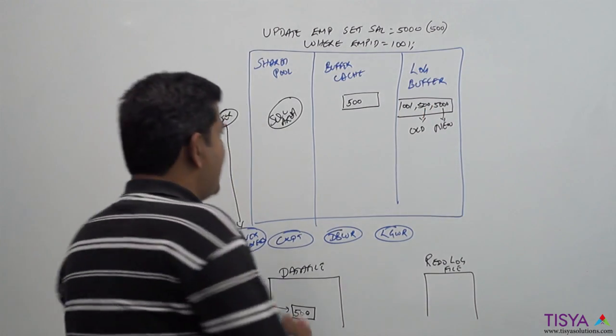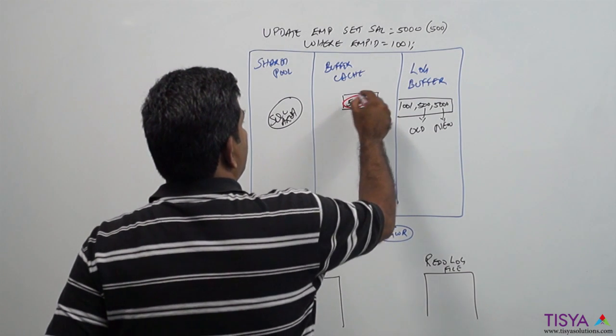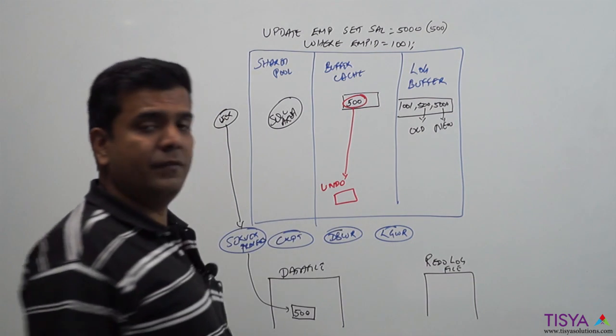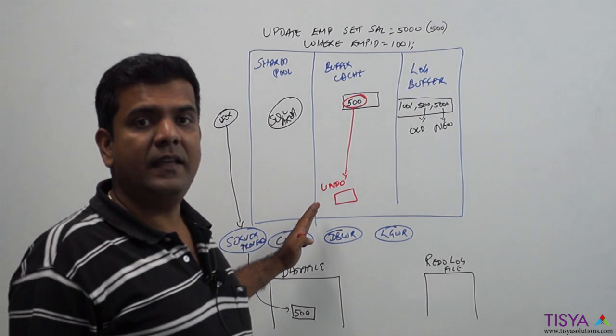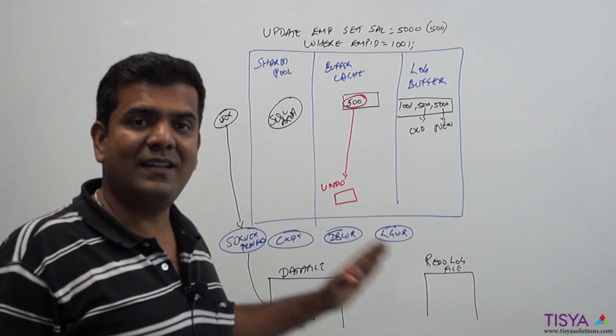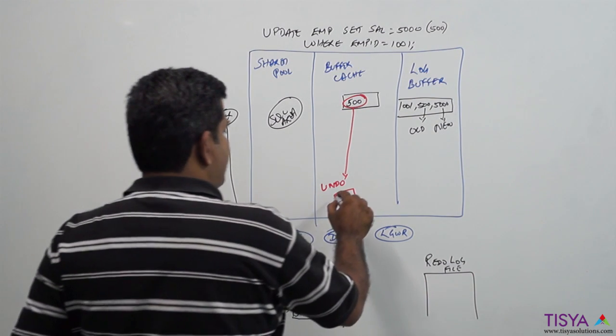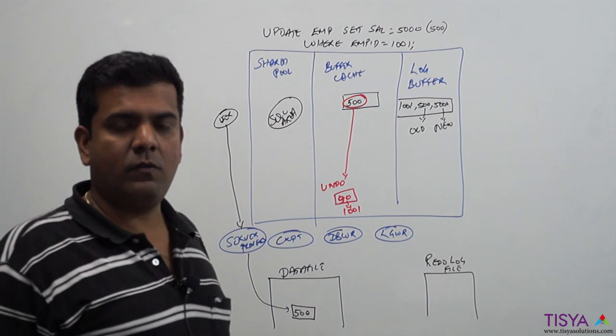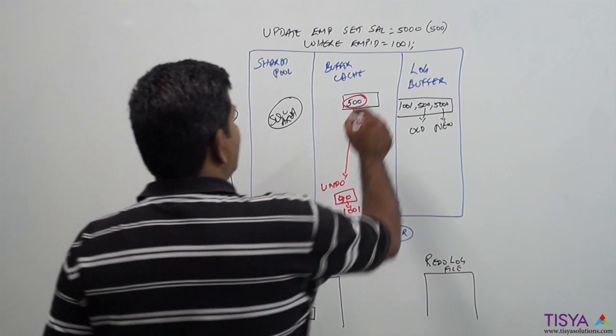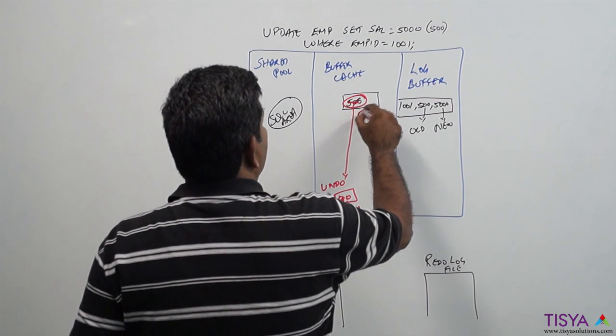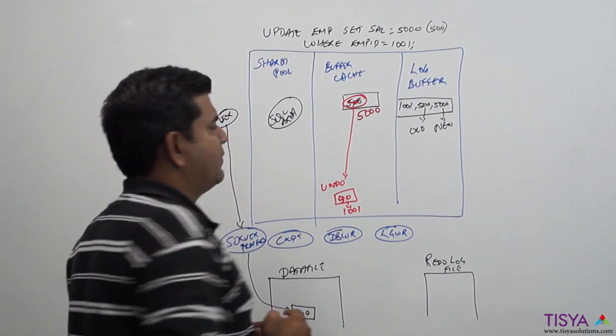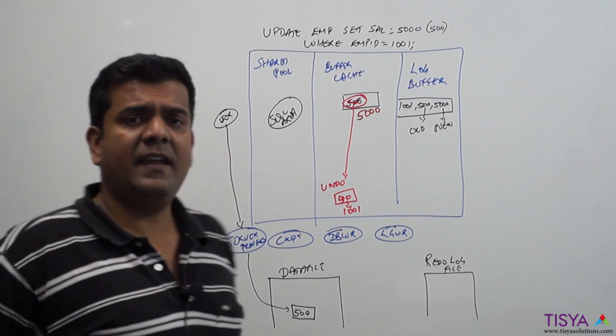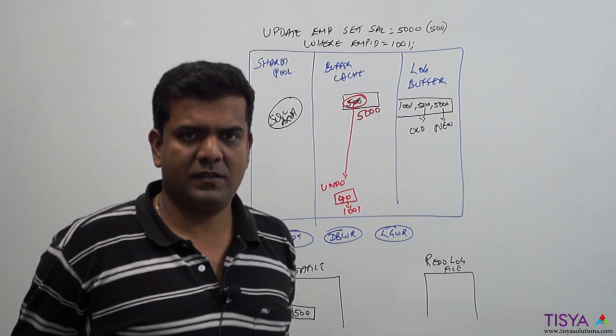Then the value of 500 is written into an undo block. Remember we spoke about undo as an area where the old values are kept till a transaction is committed. So it keeps 500 as the salary for employee ID 1001, and this value is updated to 5000. Once this is over, user gets a message saying statement processed.